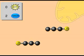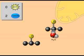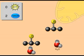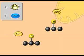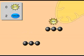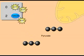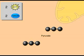A couple more reactions rearrange the atoms in the three-carbon molecules. More ATP is generated in the final reaction that yields pyruvate. For each glucose molecule broken down during glycolysis, a net of two ATPs are formed, along with two NADH molecules.